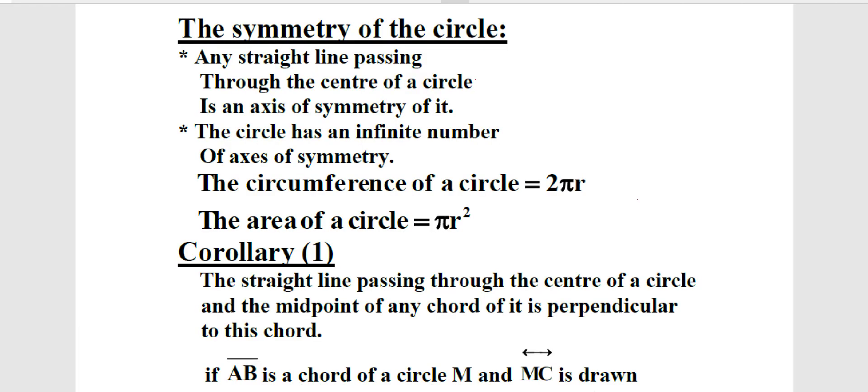The circle is a symmetric figure because we can draw a straight line that divides the circle into two congruent coincident figures. The symmetry of the circle is a straight line passing through the center of the circle, called the axis of symmetry.